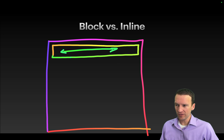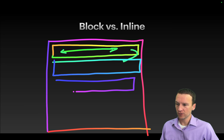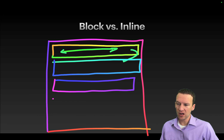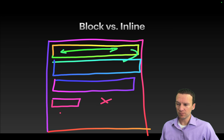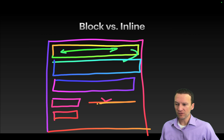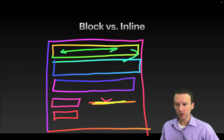A block tag can't share a line with another block tag — it has to go down to the next line. Even if a block tag has an explicit width of only 100 pixels and there's a big blank space, the next block tag won't go in that space. Every single block tag must go on a new line.